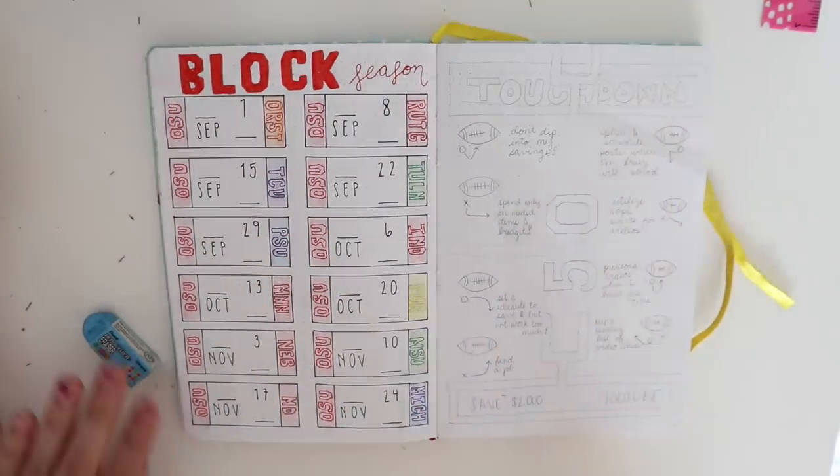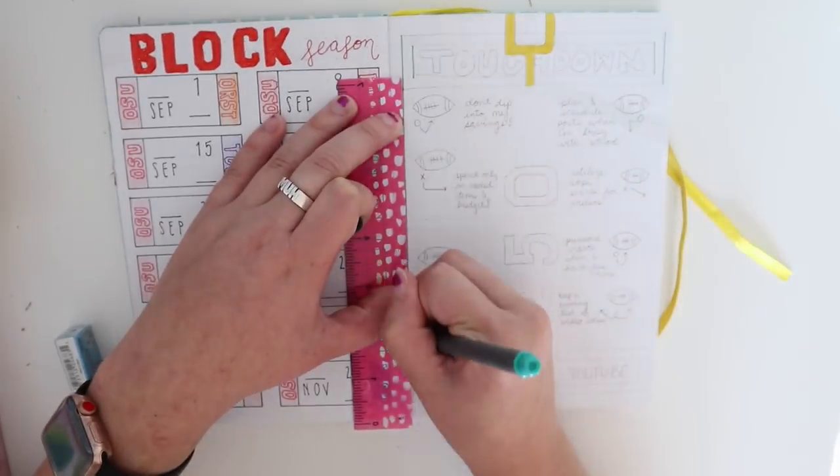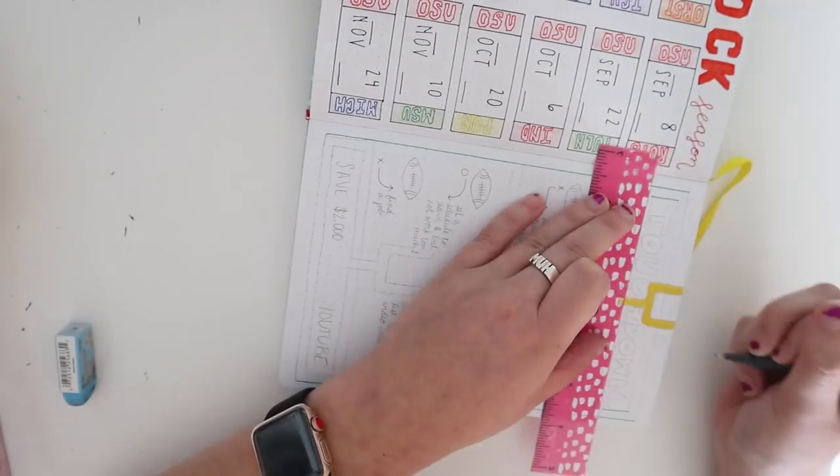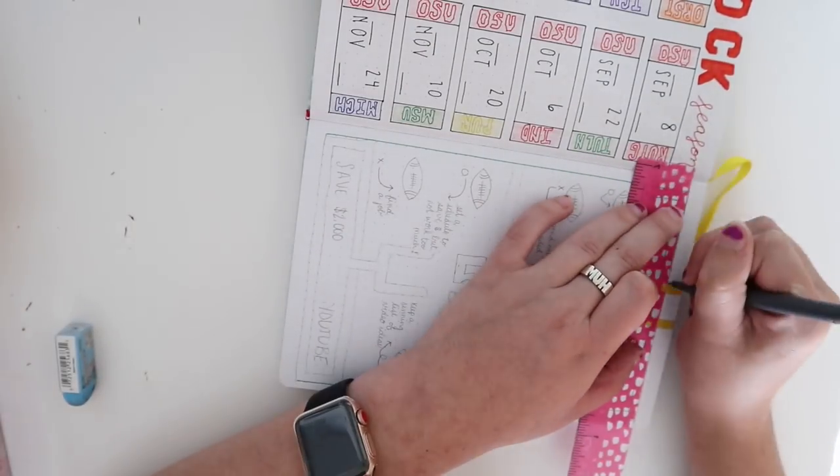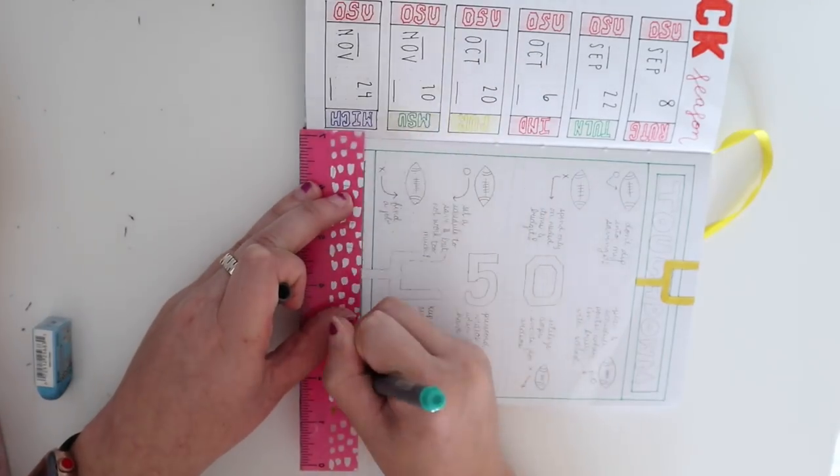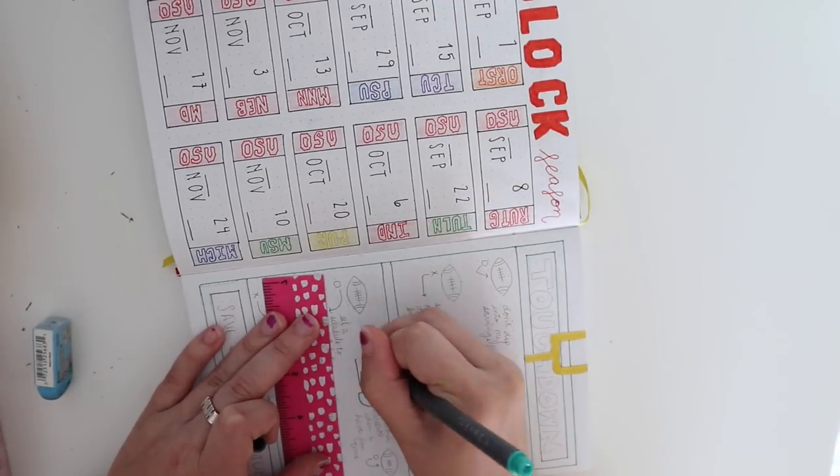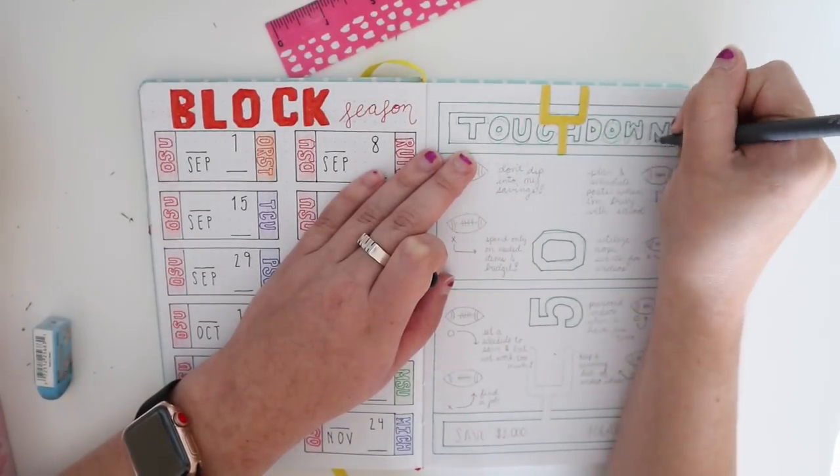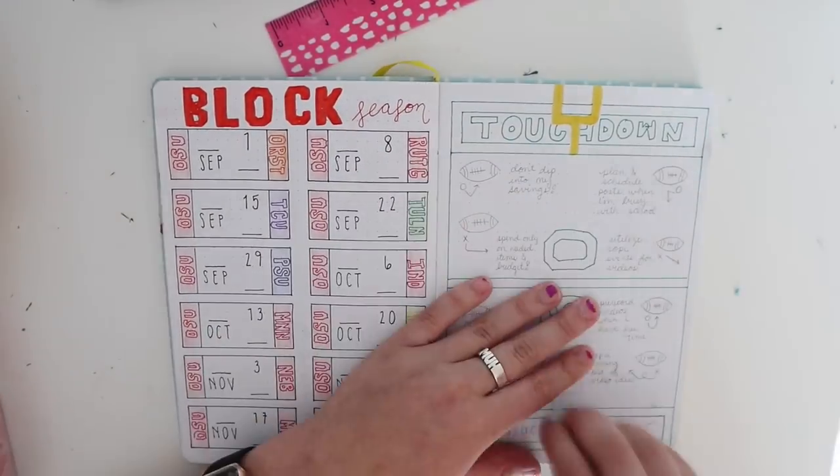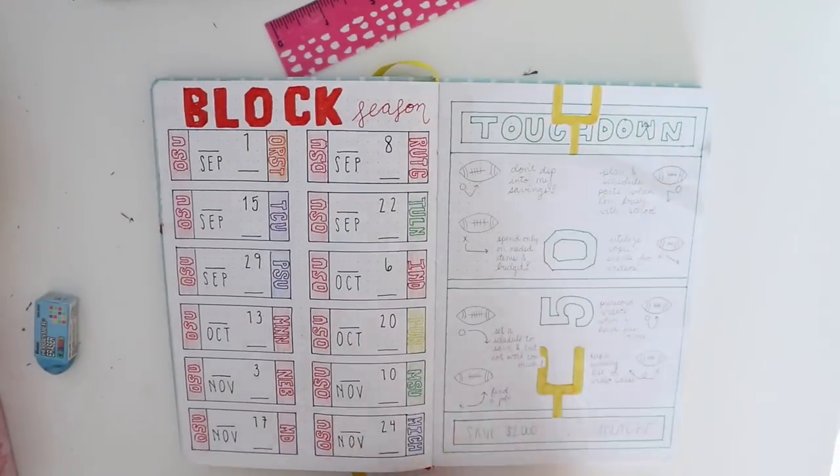The next page is my goals page for this month and to keep it up with the sports theme I decided to turn it into a football field. The bottom of the football field states my two goals for the month which is to save $2,000 and to keep up on my YouTube channel. On each half of the football field are footballs that get to track those habits that could lead me to my goals which are at the other side in the touchdown zone.